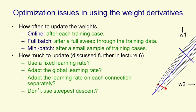Or we might go even further and say we don't really want to go in the direction of steepest descent at all. If you look at the figure on the right, when we have a very elongated ellipse, the direction of steepest descent is almost at right angles to the direction to the minimum that we want to find. And this is typical, particularly towards the end of learning, of most learning problems. So there are much better directions to go in than the direction of steepest descent, but the problem is it's quite hard to figure out what they are.